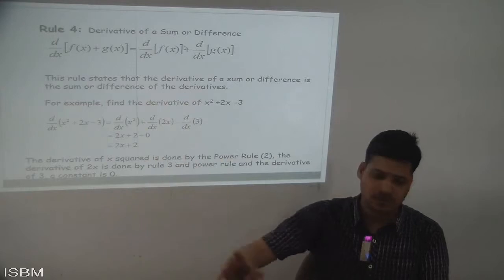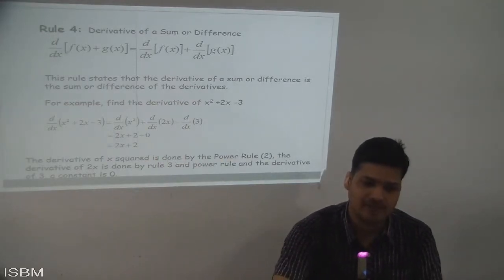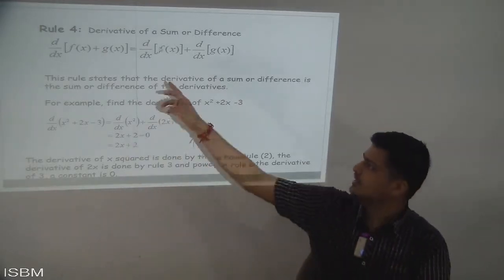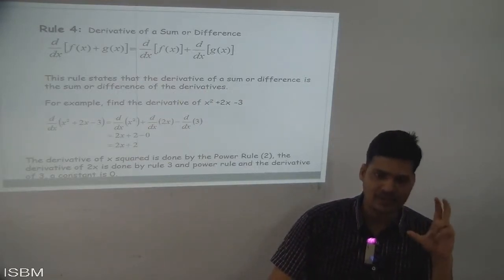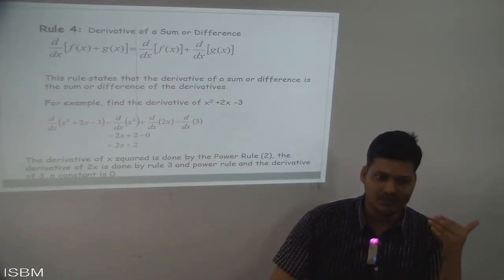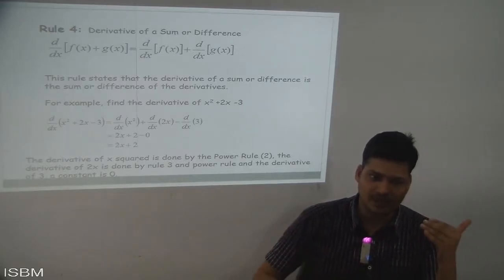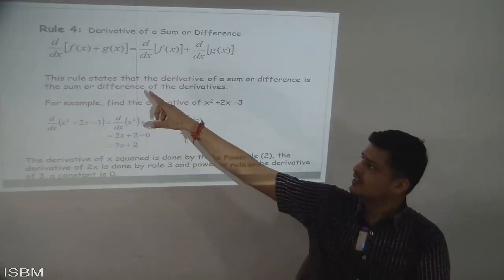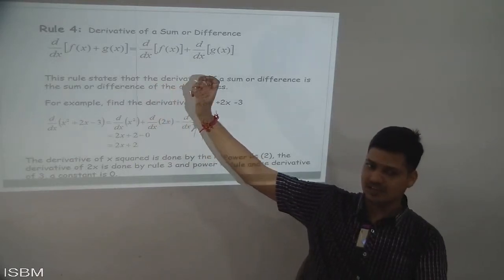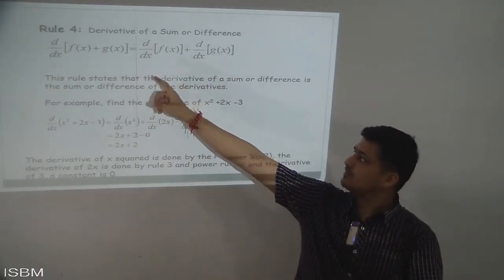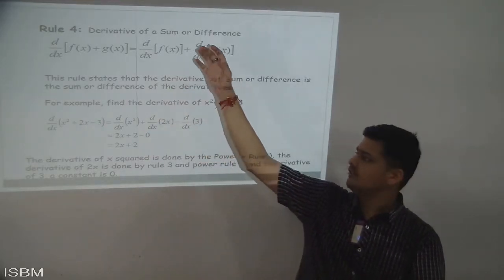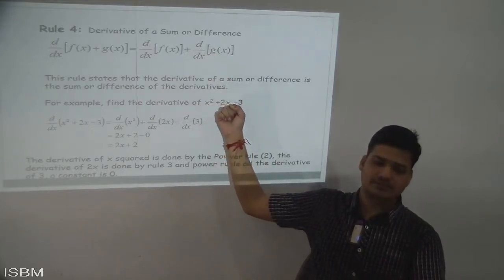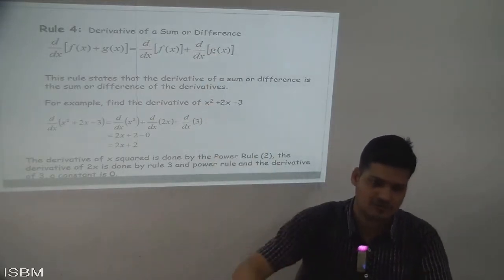When you have an equation in plus or minus form — a sum or difference form — we apply the rule: d/dx of f(x) ± g(x) is equal to d/dx of f(x) plus d/dx of g(x). We use that formula to solve these derivatives.